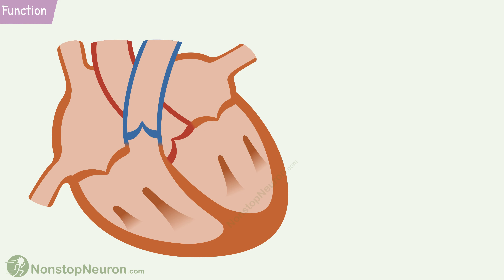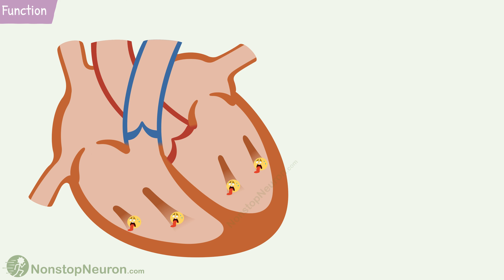If the chordae tendineae get ruptured or the papillary muscles get paralyzed, the valves would prolapse. This would lead to a backflow of blood and the heart's ability to pump blood would become limited.